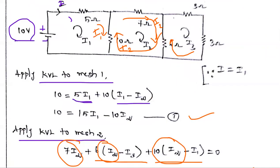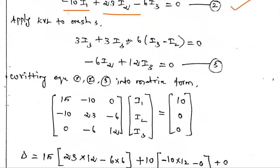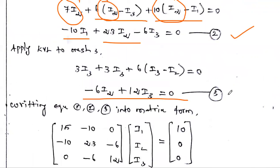Applying KVL to loop 3: there is no voltage source, only resistances. The drops are 3×I3 plus 3×I3, and the 6-ohm resistor carries current (I3−I2), giving 6×(I3−I2). Collecting terms: −6I2 + 12I3 = 0. This is equation 3.